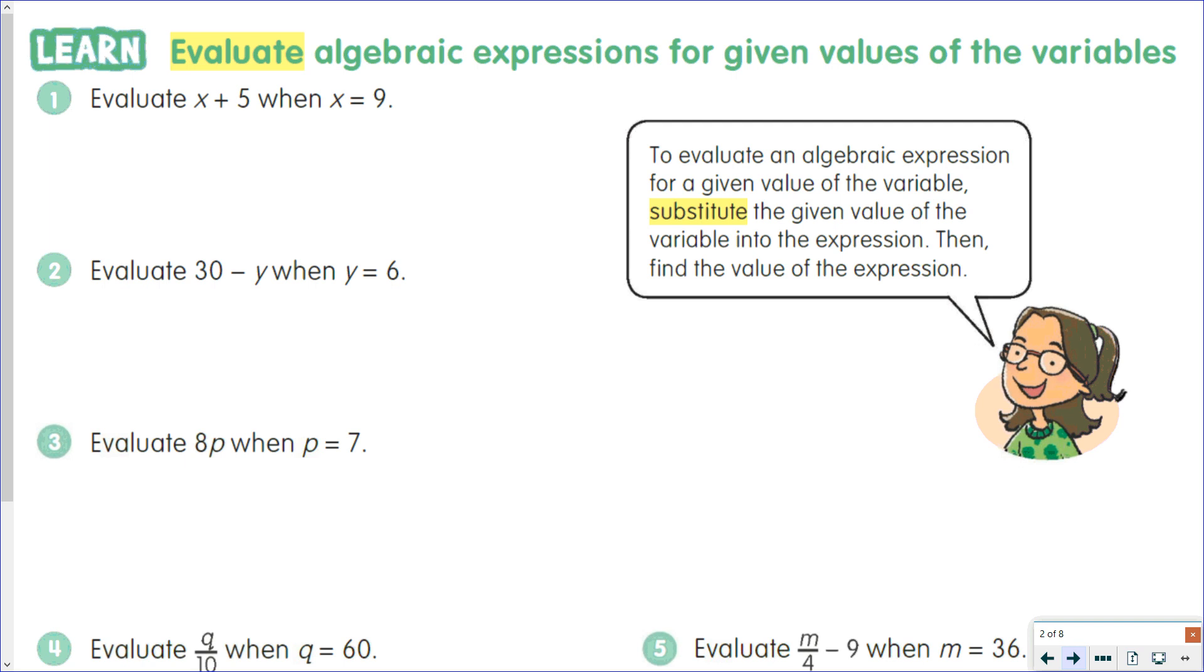Substitution occurs when you take one thing out and put something else in its place. So in our situation, we're going to be taking the variable out and we're going to substitute a value, a number, into its place. So if we're going to evaluate X plus 5 when X equals 9, our first step is to take out the X and put in 9, and then we're just simply going to do 9 plus 5, which is 14.